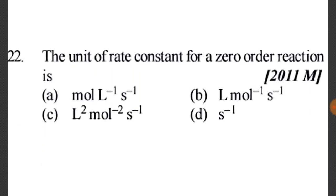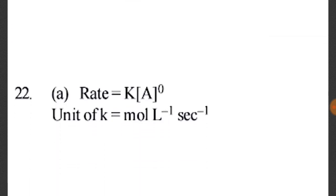Question 22: The unit of rate constant for a zero order reaction. Rate = k[A]⁰ = k, so the units of k equal the units of rate, which is mol/L/s. Option A is correct: unit of k = mol per liter per second.